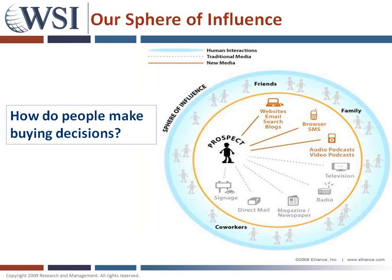Moving along to my favorite part — lead generation and prospecting. This slide shows how people make buying decisions, whether you're buying a $100,000 or $1,000,000 software package, hiring a lawyer, or even a local plumber. The sphere of influence in how people buy has not changed — people still buy through that outer rung, which is friends, family, and coworkers. That's another reason why LinkedIn is powerful — it's a personal network.